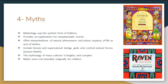Folk tales are divided into different kinds of narrative literature in the oral traditions, and they convey legends, customs, superstitions, and beliefs. The first category is myths. Myths deal with the religious beliefs of past cultures and were the earliest form of folklore. They provide an explanation for unexplainable events and offer interpretation of natural phenomena and other mysteries of life. The plot of myths usually includes heroes and supernatural beings, including gods who control natural forces. The mythology of many cultures is lengthy and complex. One interesting fact is that myths were not intended for children because they involve violent acts such as murder, rape, and incest.